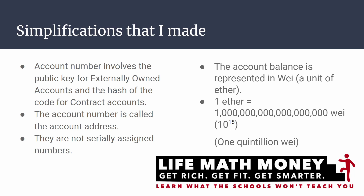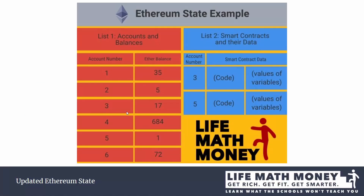The second simplification is that I said the balances are stored in Ether, but they're actually stored in Wei, which is one quintillionth of Ether — the decimal unit is 10 to the power of 18. So the number here would not be 35; it will be 35 followed by 18 zeros.